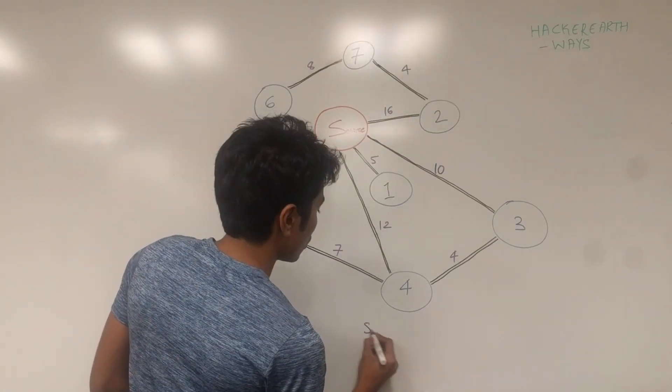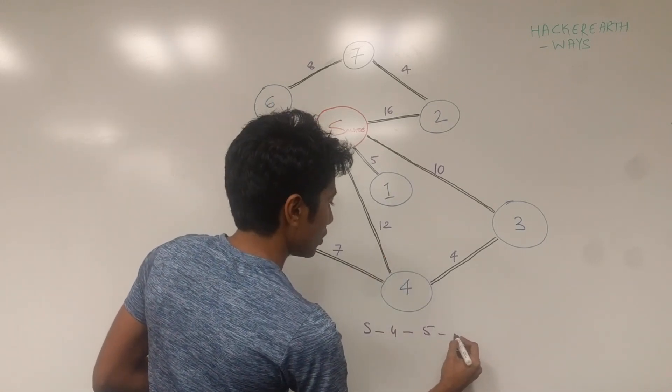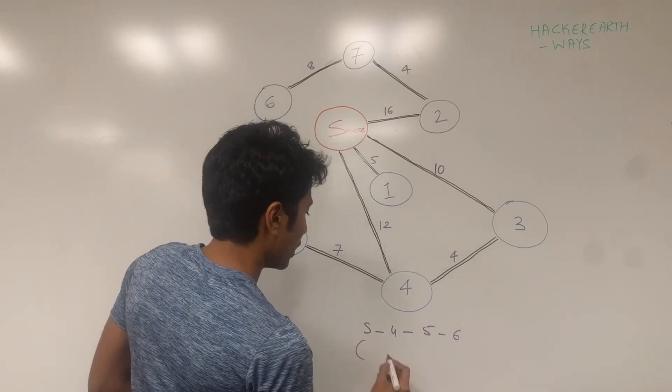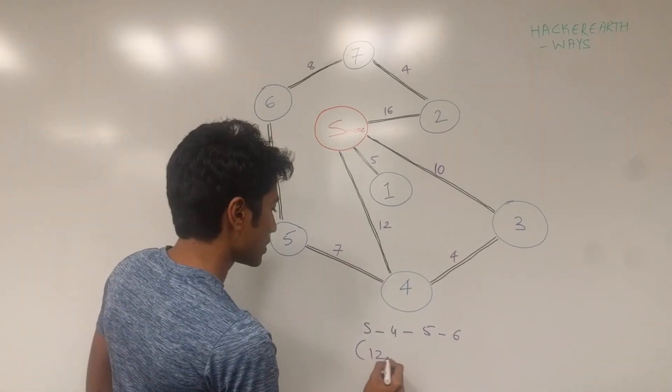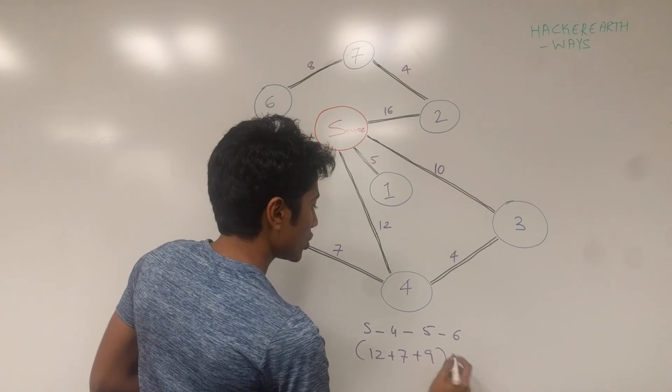So from source you go to 4 you go to 5 and then you go to 6. So in terms of cost that is 12 plus 7 plus 9 which is equal to 28.